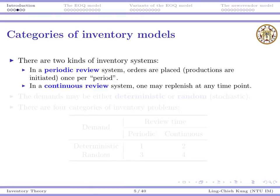On the contrary, there may be a continuous review system — that means whenever you want to replenish, you can do that. So periodic review means there are specific time points at which you are allowed to make your decision, but for a continuous review system you can do that at any time.